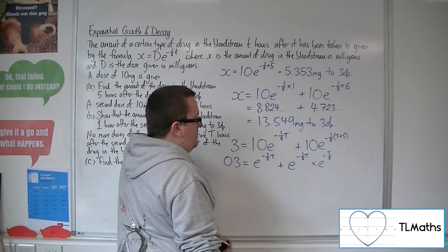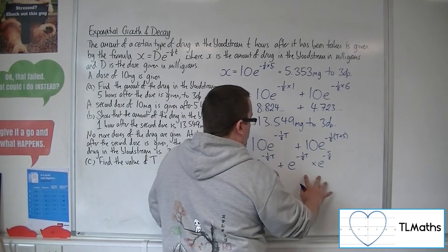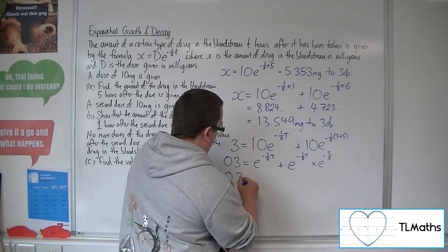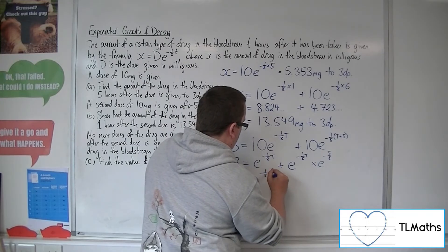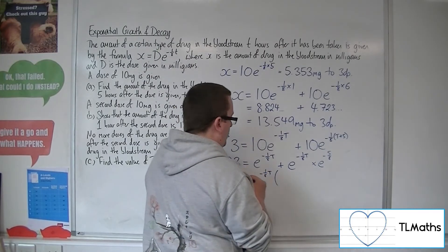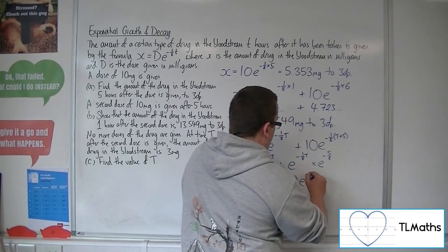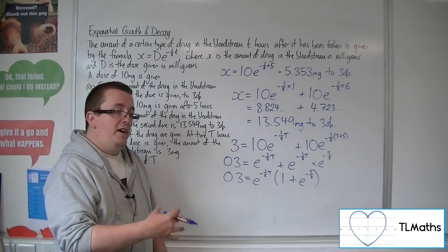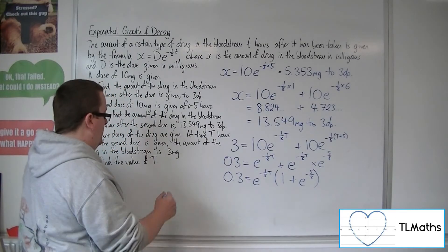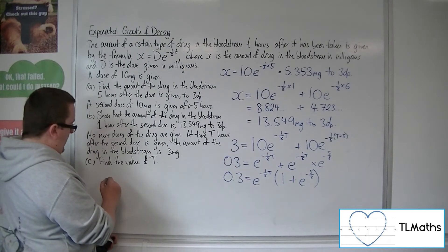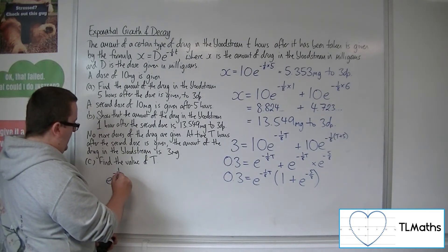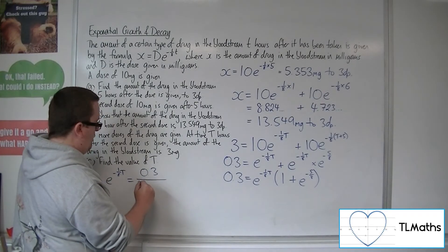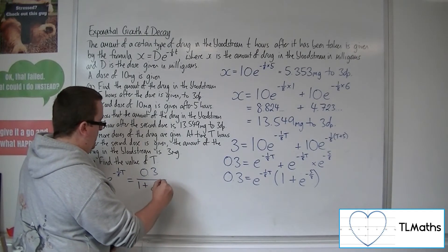Okay, so now what I could do is I could factorise this right-hand side. Now if I bring e to the minus one-eighth T outside of a big bracket, and I'd have one plus that e to the minus five-eighths, then I can divide both sides by that bracket. Now I'm going to go over here because I've got a little bit more space. So I'm going to have e to the minus one-eighth T is equal to 0.3 divided by that bracket, 1 plus e to the minus five-eighths.